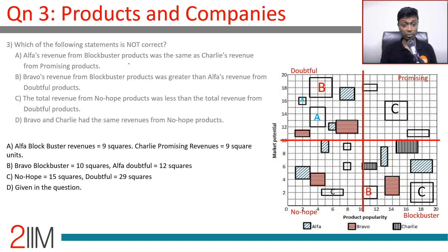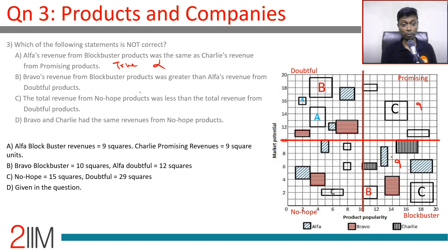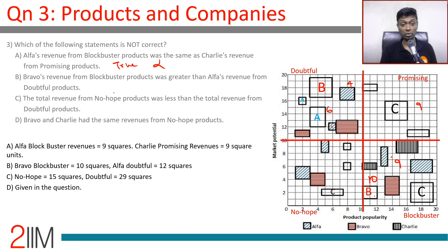Question: Which statement is NOT correct? Statement A: Alpha's revenue from Blockbuster products equals Charlie's revenue from Promising products. Alpha's Blockbuster boxes total 3 + 6 = 9 square units. Charlie's Promising product is the big 3×3 = 9 square unit box. This is indeed equal — so statement A is true. Statement B: Bravo's revenue from Blockbuster was greater than Alpha's revenue from Doubtful. Bravo Blockbuster = 4 + 6 = 10 units. Alpha Doubtful = 6 + 4 + 4 = 12 units (not 10). Bravo's 10 is less than Alpha's 12 — so this statement is false. Choice B is our answer.